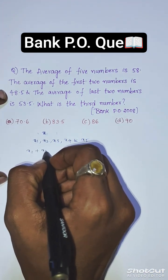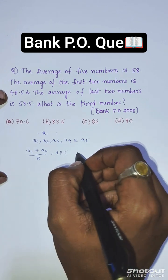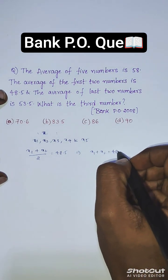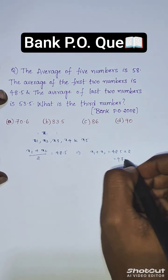Then (x1 + x2)/2 = 48.5. From this we get x1 + x2 = 48.5 × 2, which is 97.